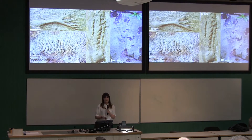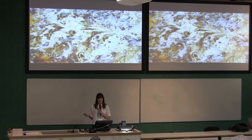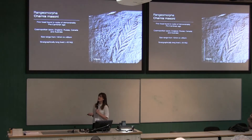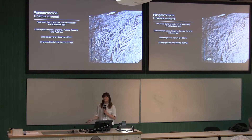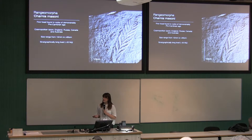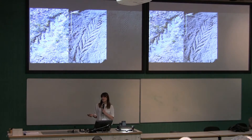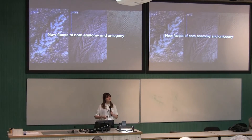The rangiomorphs are sessile, frondose, benthic forms characterised by something called the rangiomorph unit, which is a hierarchically self-similar branching pattern — branches constructed of branches constructed of branches. Of the rangiomorphs, it is Charnia that is the most iconic, being the first fossil demonstrably found from pre-Cambrian rocks. It's a cosmopolitan taxon found in every major rangiomorph deposit, is stratigraphically long-lived, and its size ranges from just over one centimetre to an expected just over a metre based on incomplete specimens. Because of sites of exceptional preservation like Mistaken Point, we can begin to look at populations and uncover new facets of anatomy and ontogeny.